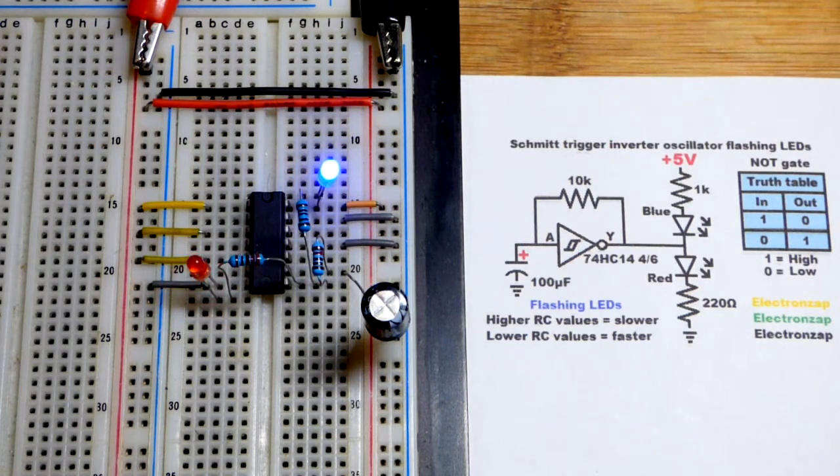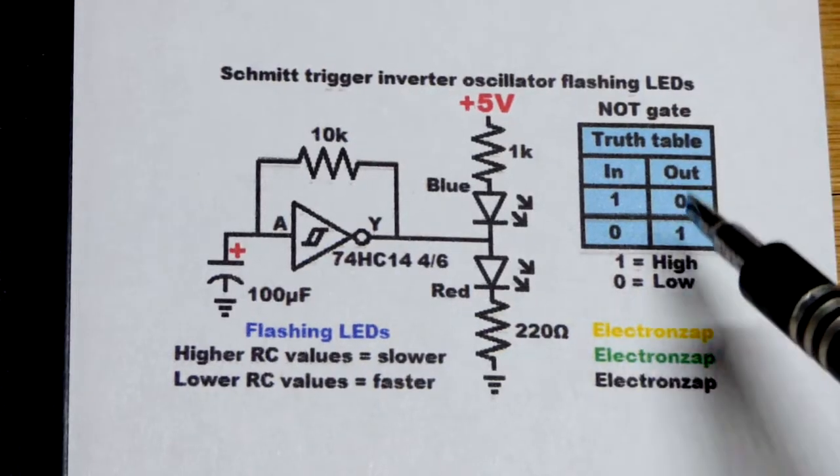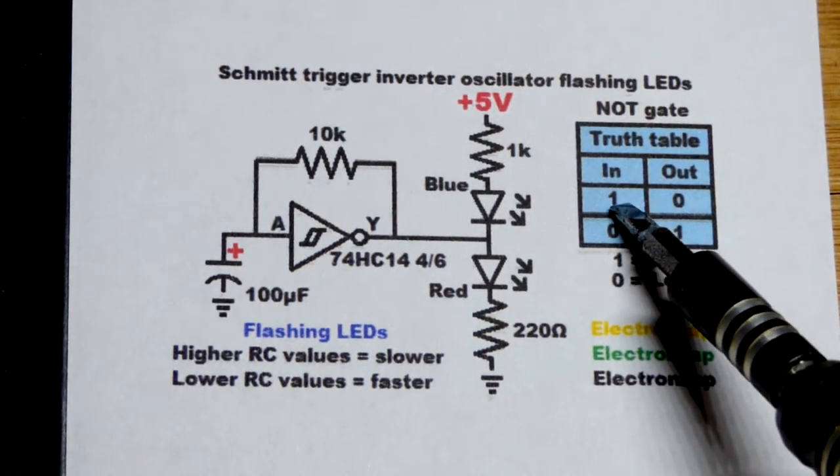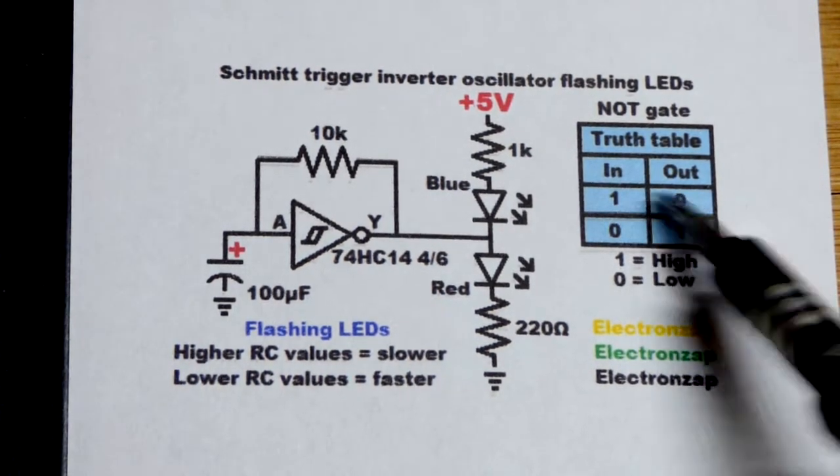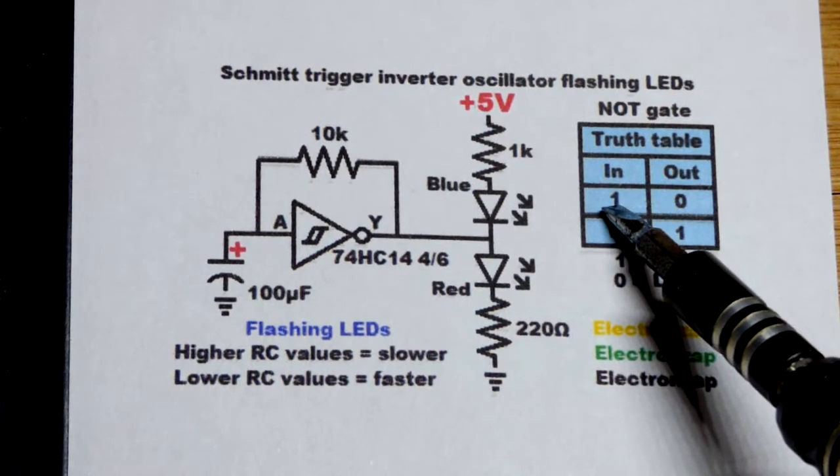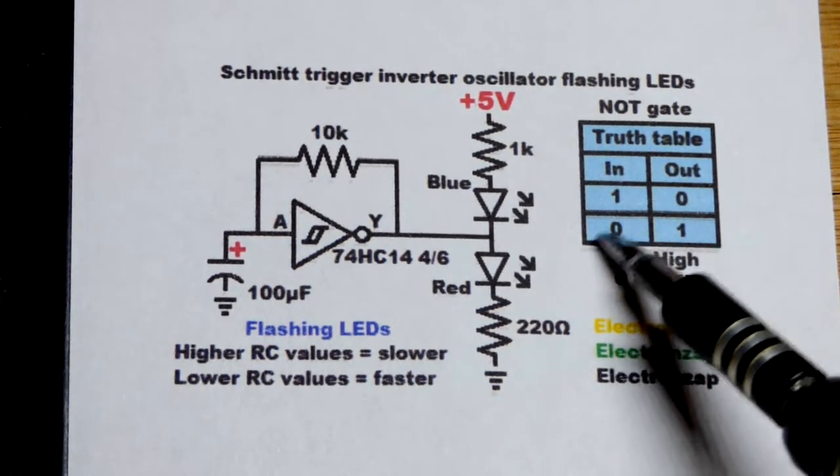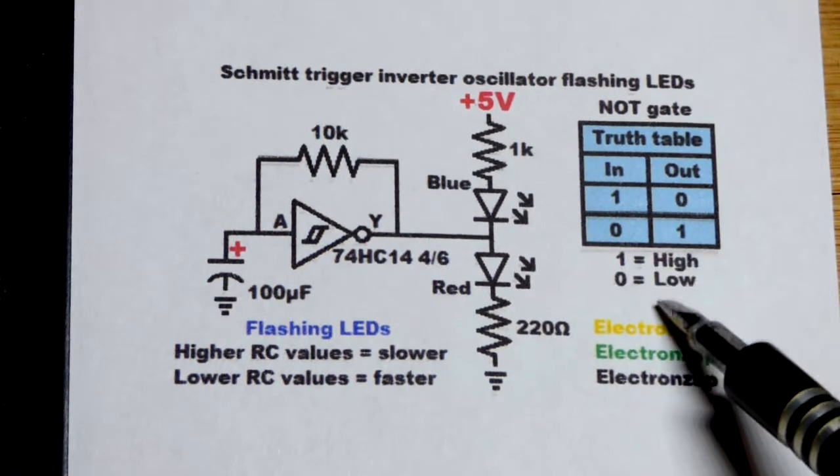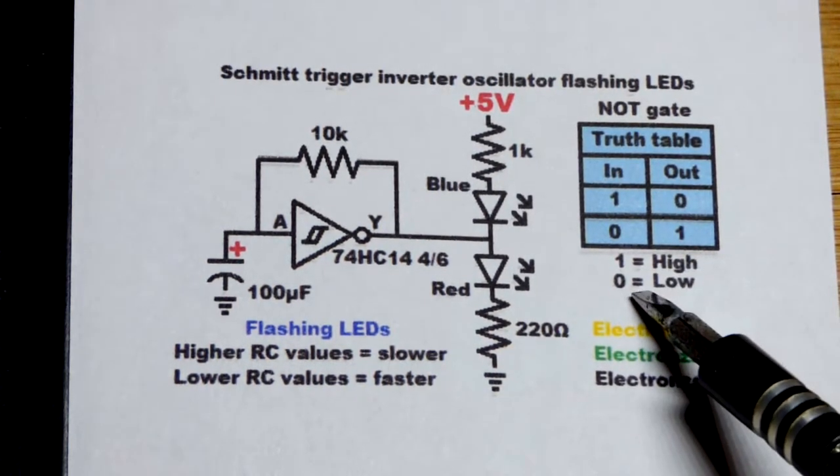So a digital inverter, not a power inverter which is different, but a digital inverter, the output is the opposite of the input. If you have a 1 in, you'll have a 0 out. If you have a 0 in, you'll have a 1 out. So we could also say high for 1 or low for 0.